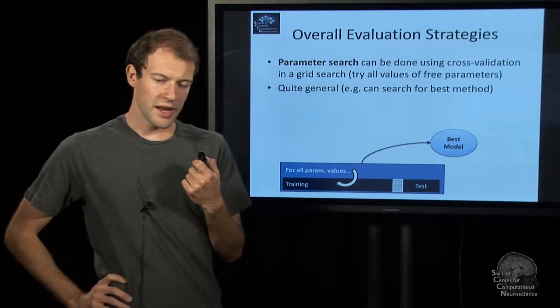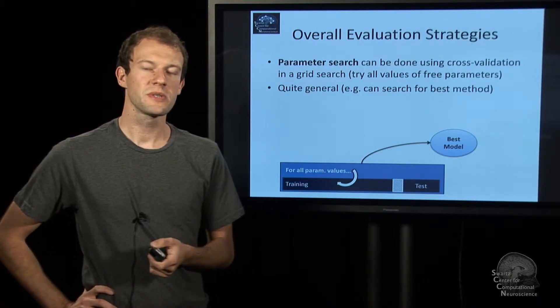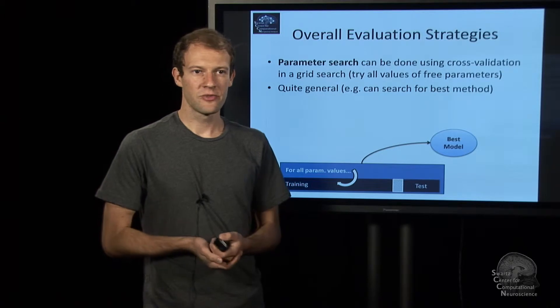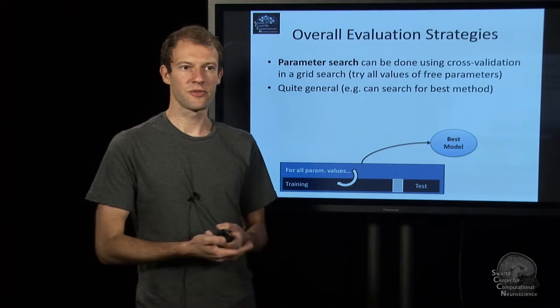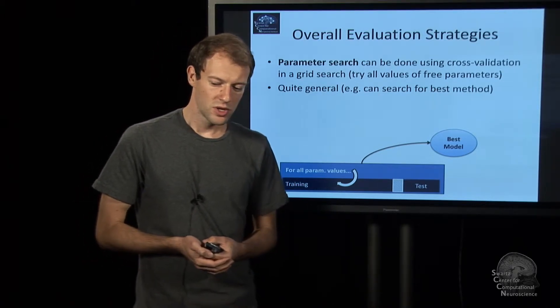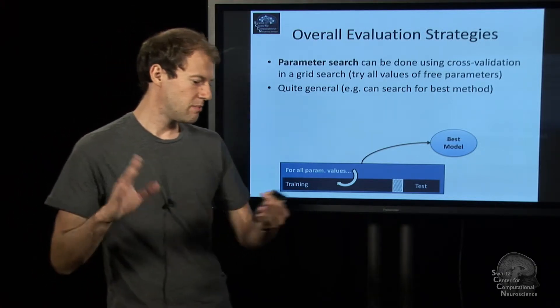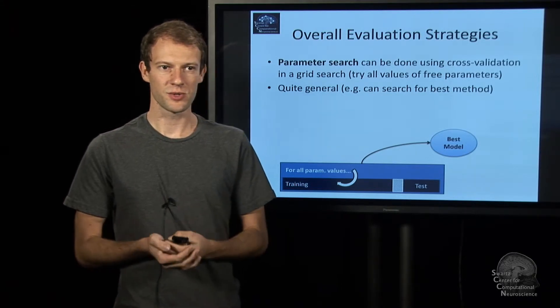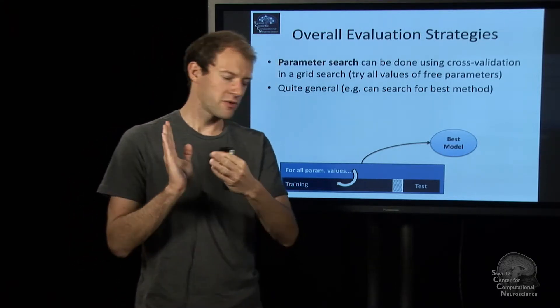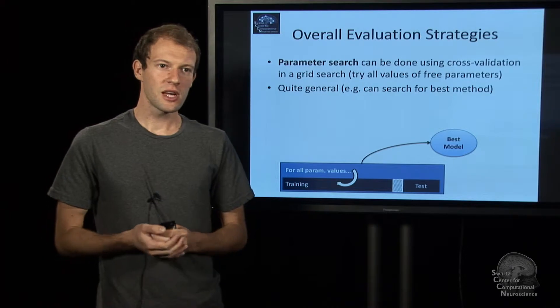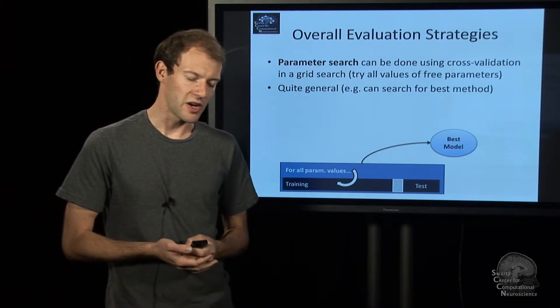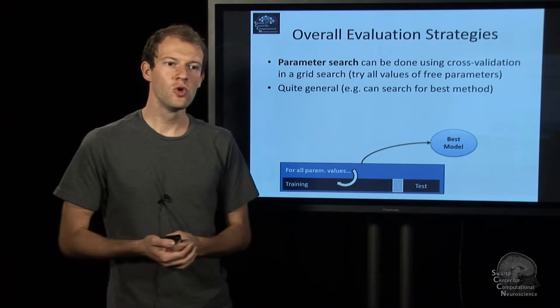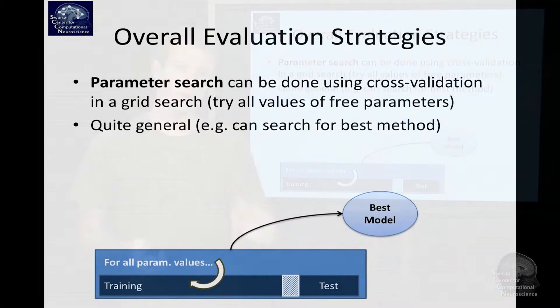There is another benefit of this procedure, and this is the following. If your model had a free parameter, or if your method had a free parameter that you couldn't determine in some kind of analytical way, such as a regularization parameter, say, what frequency band is the right one, you can basically try out each parameter value and run a cross-validation to figure out which parameter set works best.